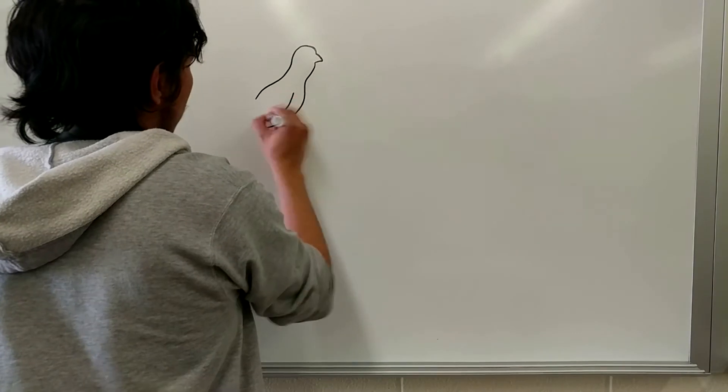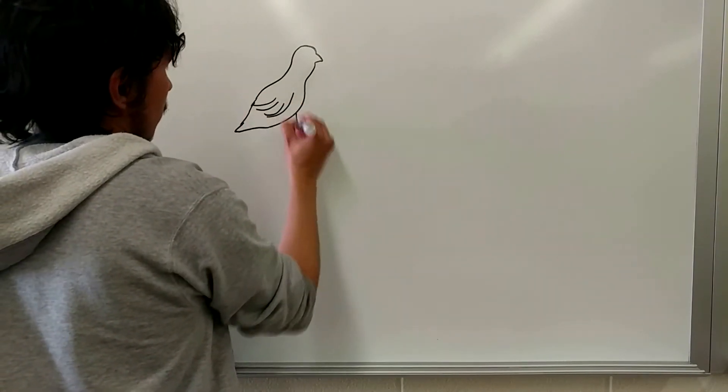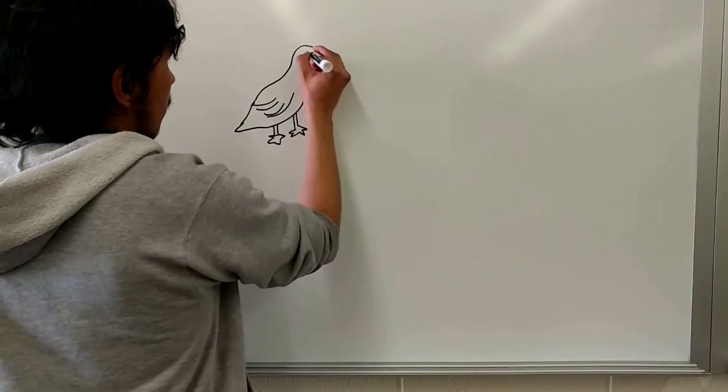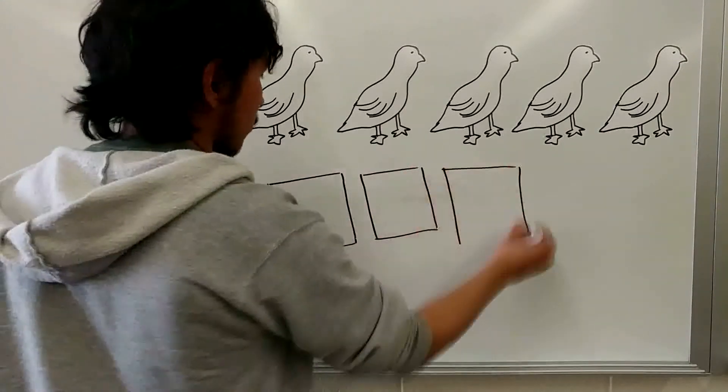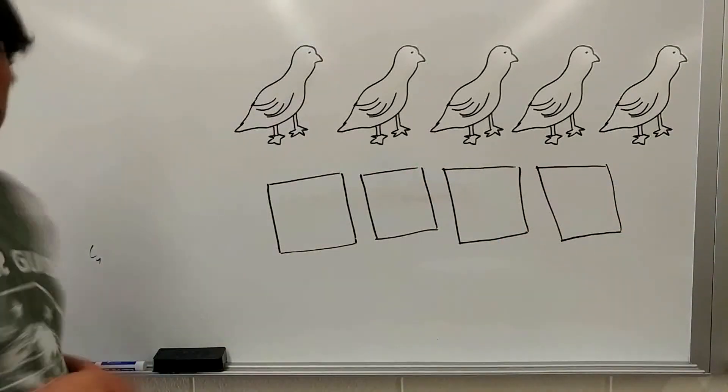So, if we have four pigeons and only three holes, then at least one hole will contain two pigeons.